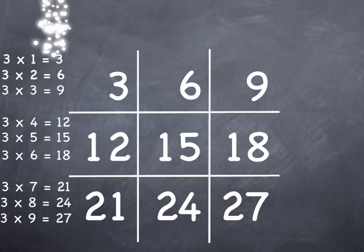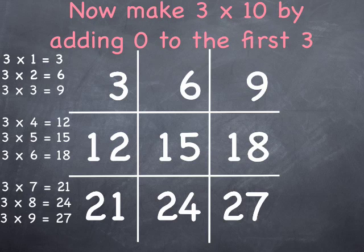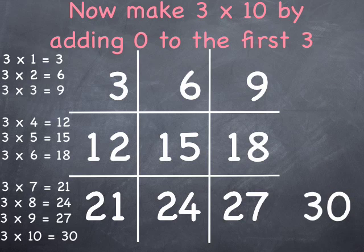And if we take that first 3 and drop it down and add a 0 after it, we have created 10 times 3. You can make the threes anytime you want on this fun tic-tac-toe square.